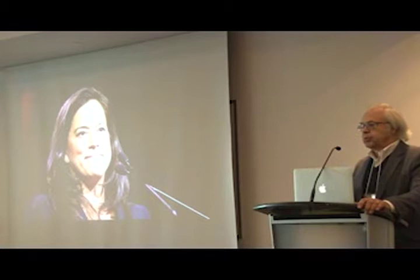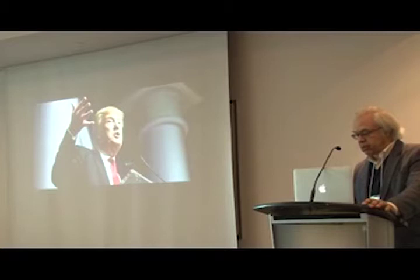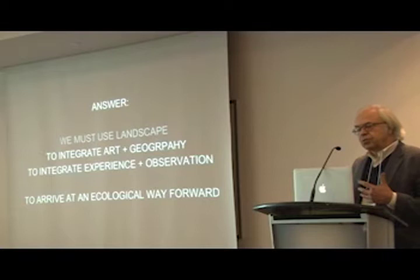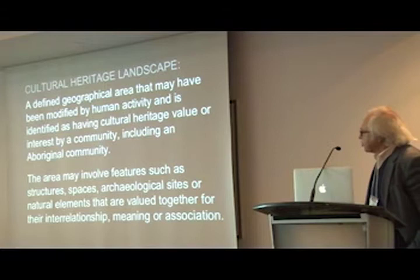I would say that the American election is about two cultural landscapes that coexist in the same observable landscape that J.B. Jackson and Carl Sauer were looking at. So my answer is that we have to use landscape to integrate art and geography, to integrate experience and observation. In order to get an ecological way forward, we have to respect the fact that it's as important to understand how we understand nature — our environment — as how our environment understands us.